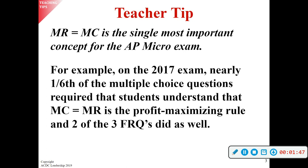At any point the marginal cost becomes greater than the marginal revenue — meaning it costs more to produce than what you can sell for — the business stops production. That's the whole rule. And it comes up over and over again because you'll use it for all four of the market structures.